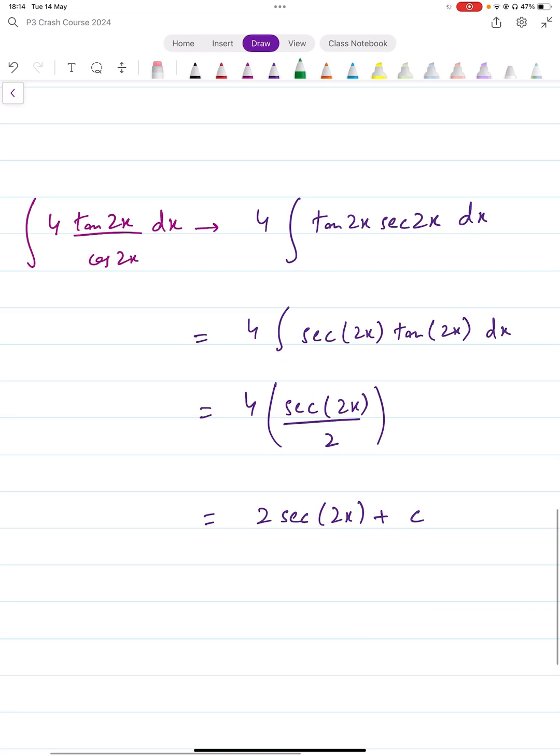This is an example from a recent paper, integration of tan 2x over cos 2x. How would you do that? You would bring cos 2x to the numerator and write that as secant. Now, this becomes secant into tan. Integration of that is secant. So you say secant 2x divided by the derivative of 2x, which is secant 2x divided by 2, and that gives you the final result.